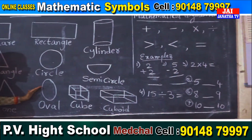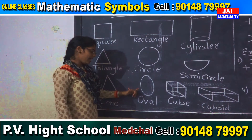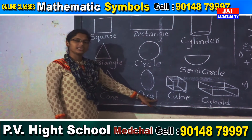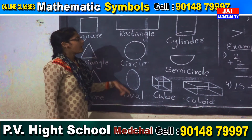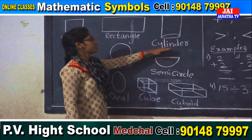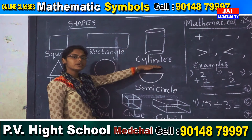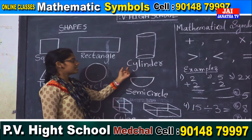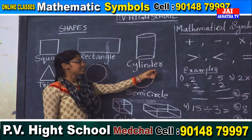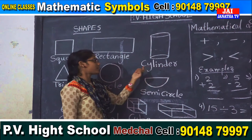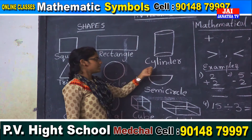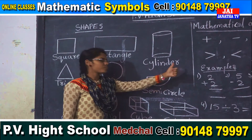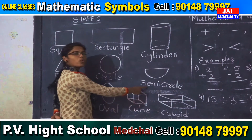And what is this shape? This is an oval. O-V-A-L. Oval. And see, what is this shape? This is a cylinder. C-Y-L-I-N-D-E-R. Cylinder.